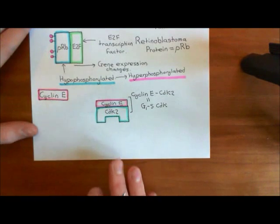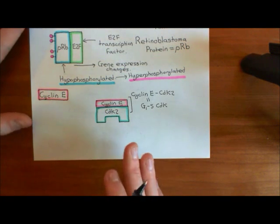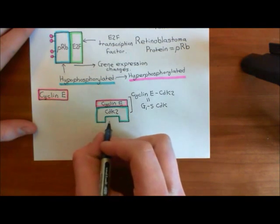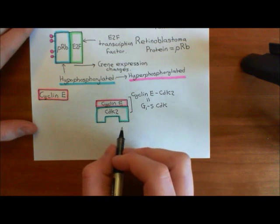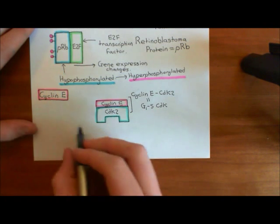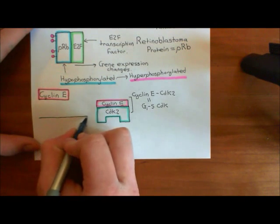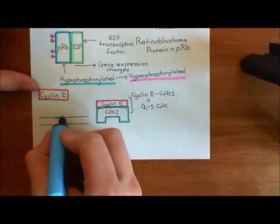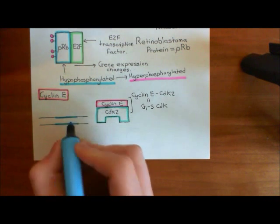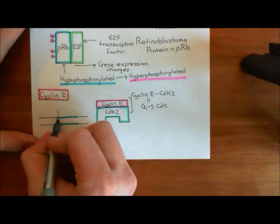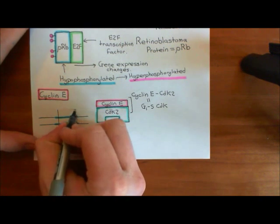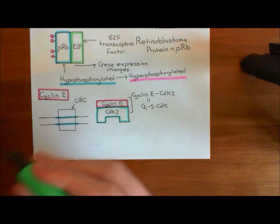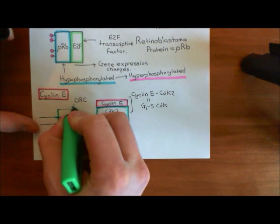Now we have cyclin E bound to CDK2, and these complexes are going to cause the firing of the origins of replication. They will cause a huge number of other proteins to bind onto the pre-replication complexes. To remind you: all the way along our chromosomes we have special portions known as origins of replication, and all the time these origins of replication have a complex bound to them — the origin recognition complex, or ORC, which I'll colour in green.